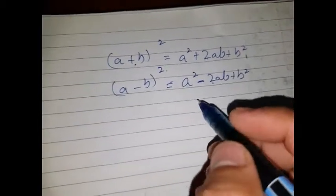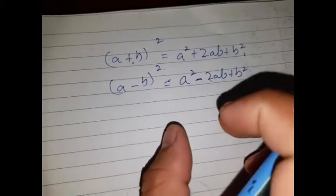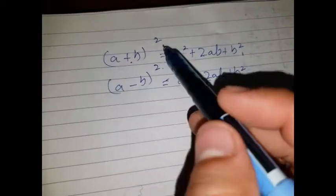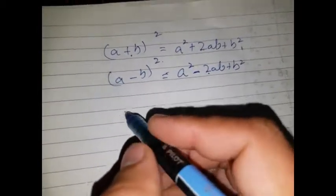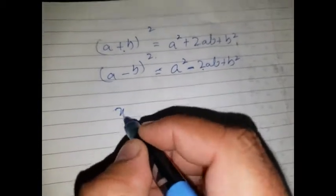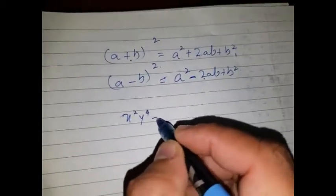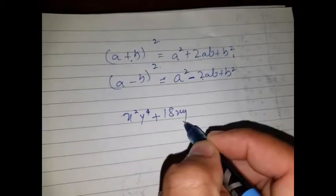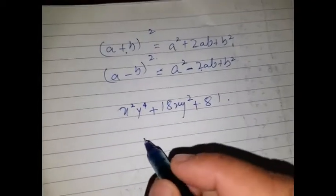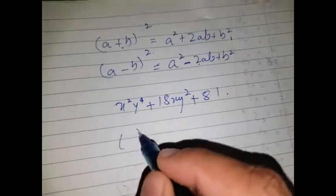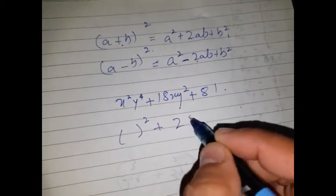You can factorize any algebraic expression if you have the constant which goes according to these formulas. I'm going to do this first one for you. Here this is x²y⁴ + 18xy² + 81. So first of all, I know that my formula is a² + 2ab + b².